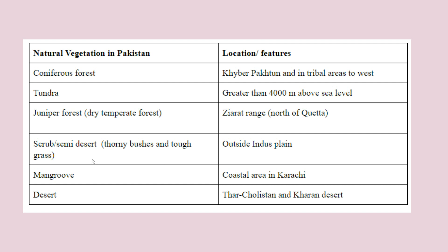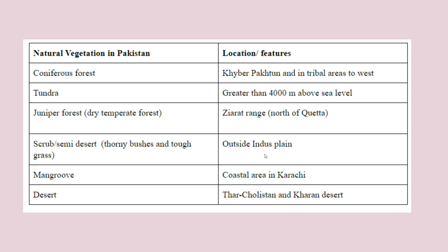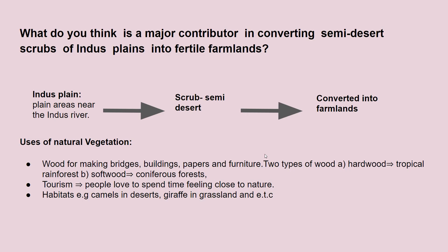For scrub and semi-desert vegetation, it is listed as being outside the Indus plain because, even though the Indus plain originally had scrub and semi-desert vegetation, farmers converted it into farmland through an irrigation system. That land which had thorny bushes was converted into fertile land. So we can say that the natural environment was converted into the human environment.